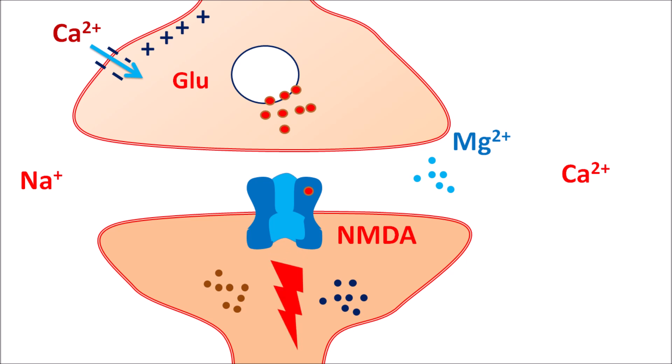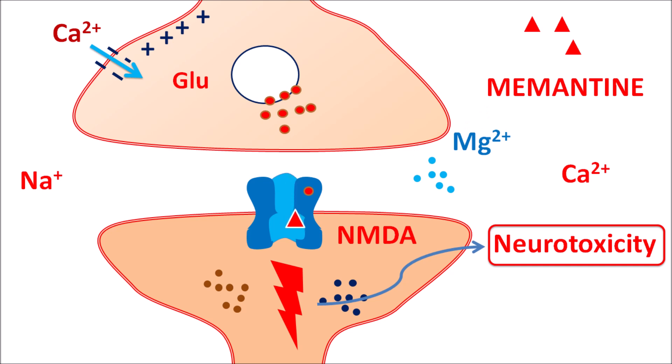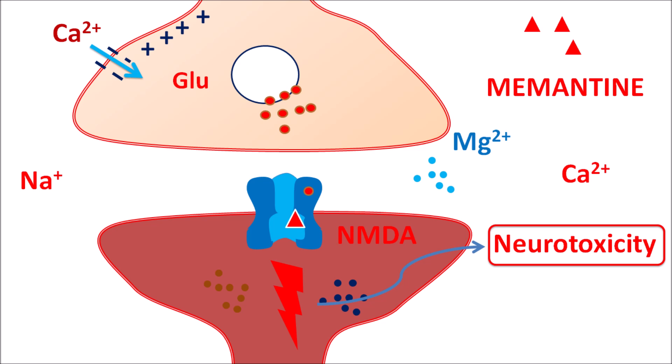This repeated excitation can produce neurotoxicity, resulting in neurodegeneration and progression of Alzheimer's disease. Memantine acts as an NMDA receptor antagonist — it binds to NMDA receptors with stronger affinity than magnesium, blocking the action of glutamate and reducing postsynaptic stimulation. This reduces neurotoxicity, resulting in improvement of symptoms in patients with Alzheimer's disease.